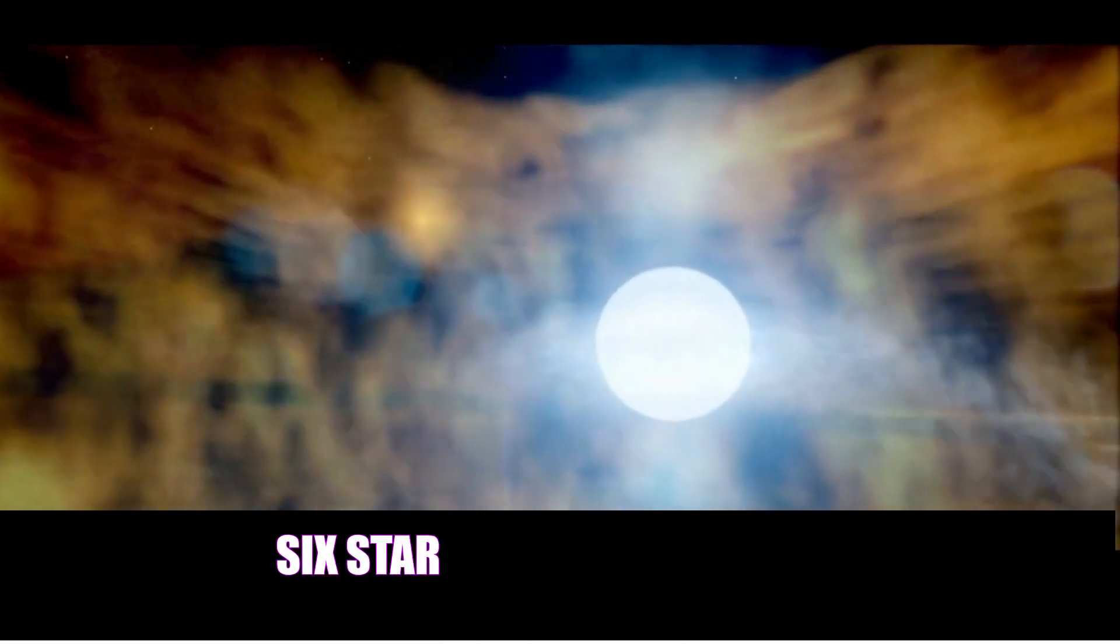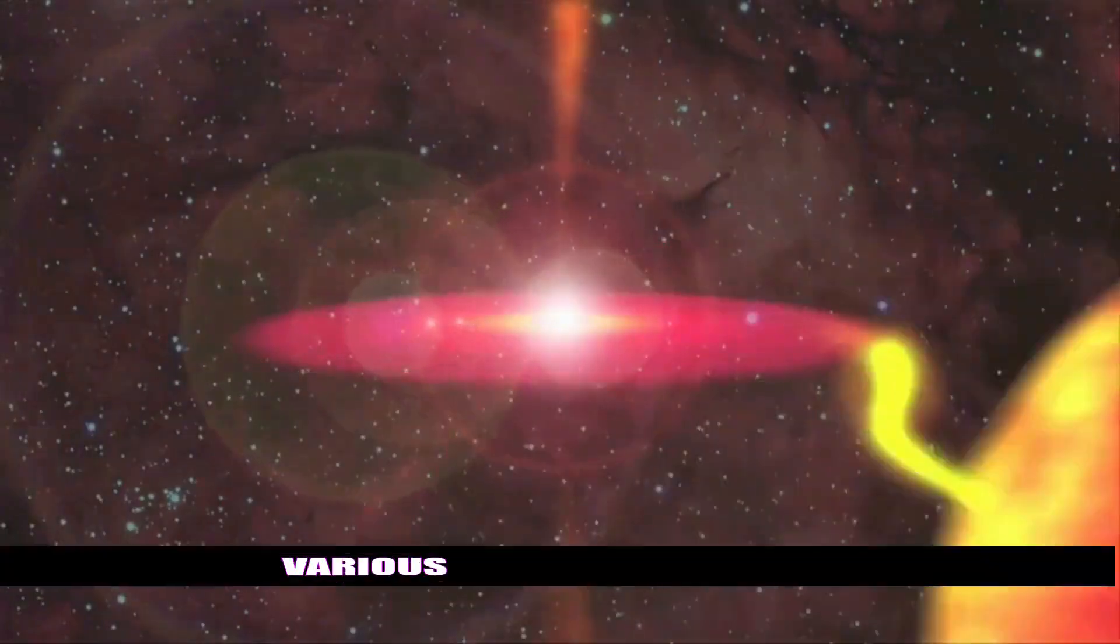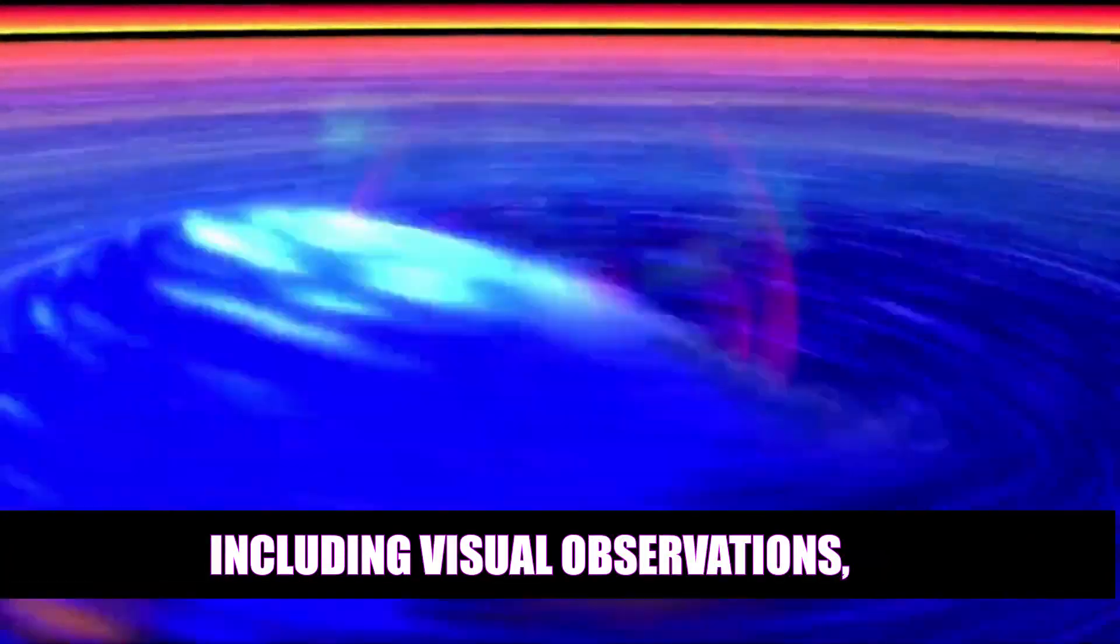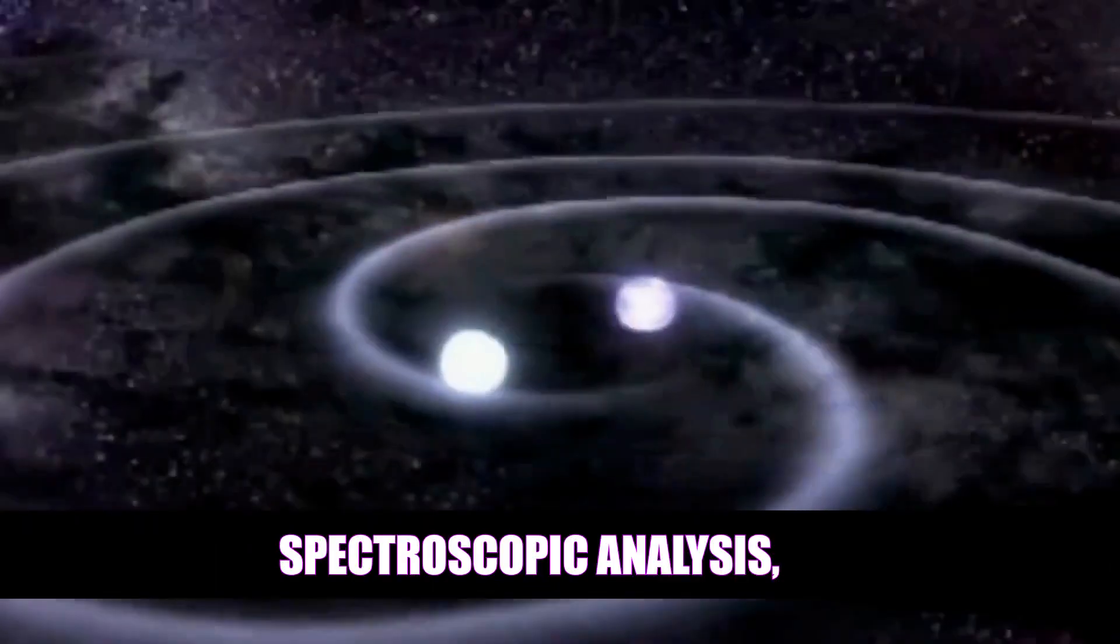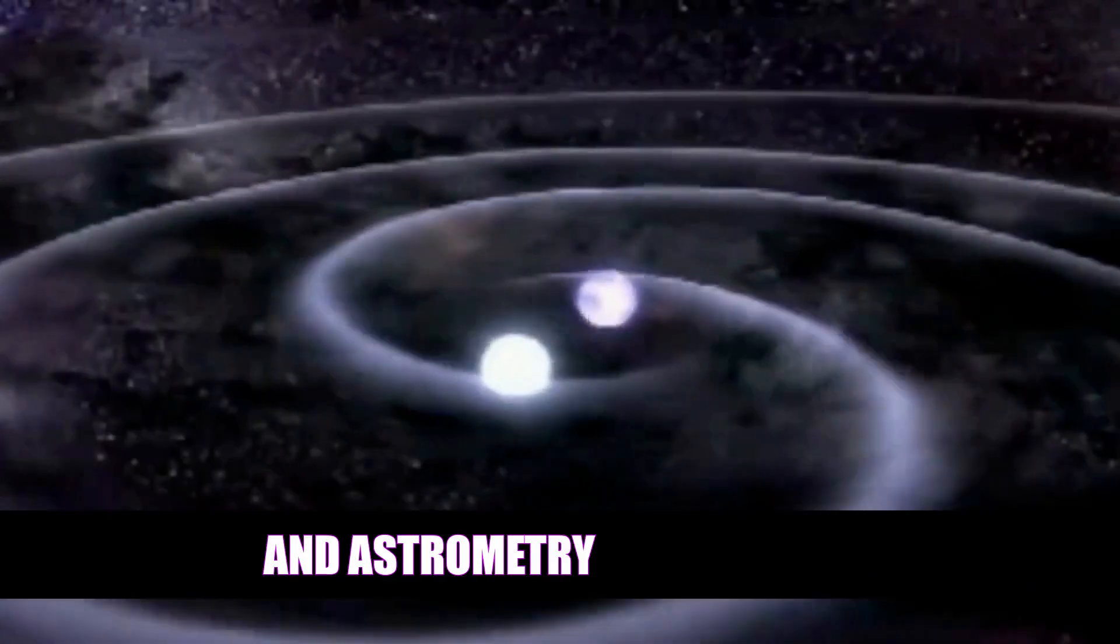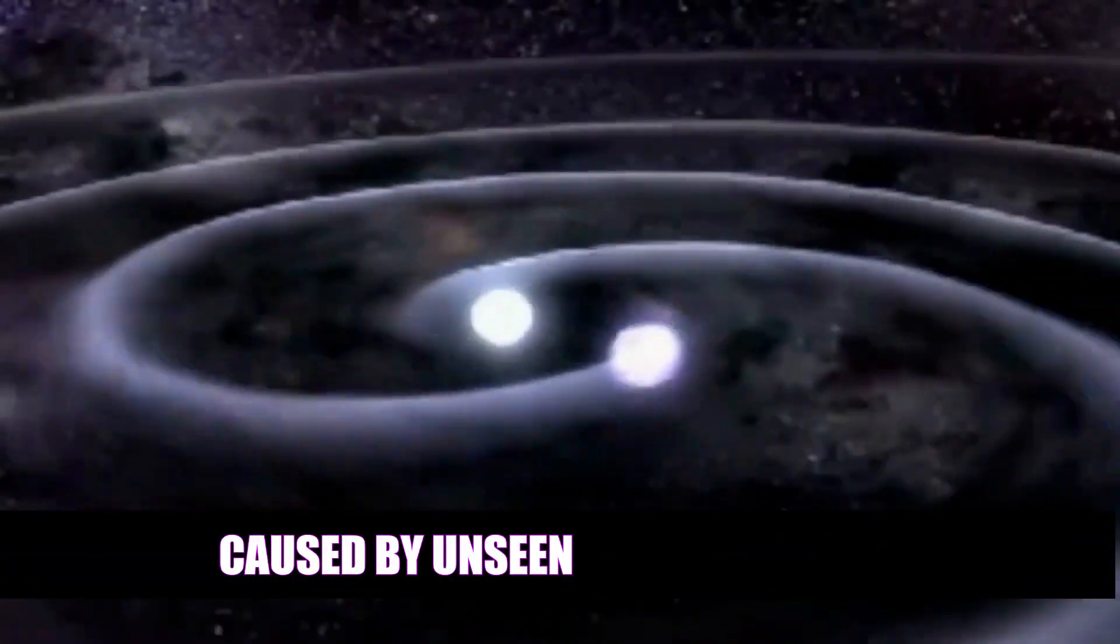How do we discover binary stars? Various methods enable their study, including visual observations, spectroscopic analysis, photometric measurements during eclipses, and astrometry to detect deviations in star positions caused by unseen companions.